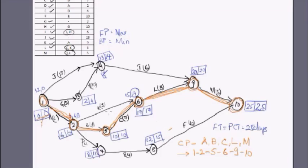One important point to note: despite nodes 2 and 6 both being on the critical path, activity K is not a critical activity. If we add K's duration to the earliest time at its tail node — 6 + 9 = 15 — we do not reach 17, the earliest time at node 6. So it was through B and C, not K, that we obtained those values. Be careful: nodes at both ends can be on the critical path, but the activity between them may still not be critical.